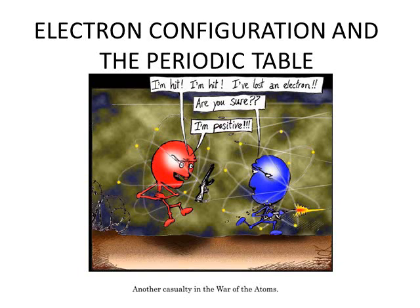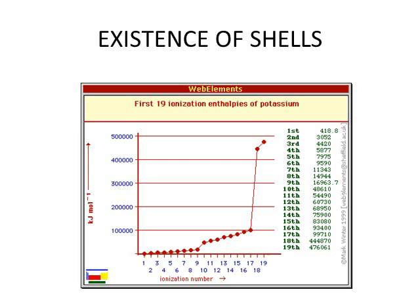We now know that an atom consists of a nucleus with electrons orbiting around it. Let's have a closer look at how those electrons are actually arranged. Observing that there were occasional large jumps in the energy required to remove successive electrons from an atom, Niels Bohr proposed the existence of electron shells.